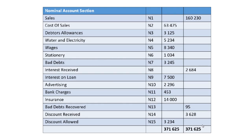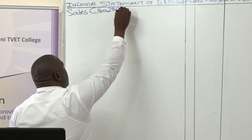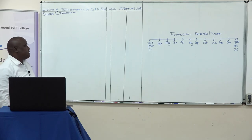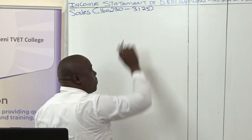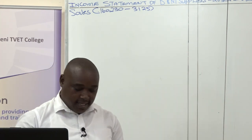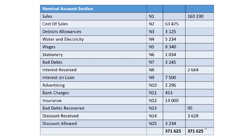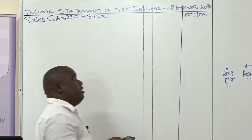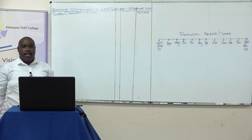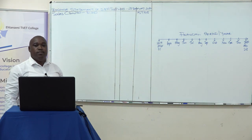During the course of the year, there were some purchases returned back to the business by our customers. So we take the gross sales of 160,280 and subtract the returns made by customers, which amount to 3,125. That gives us net sales of 157,105.